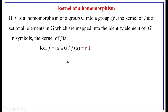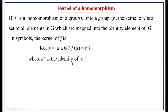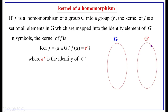That is, we write all the elements of G which are mapped onto the element E', where E' is the identity element of the co-domain group G'. This is group G, and this is group G'. Now F is a function from G to G'.